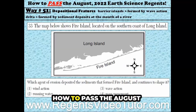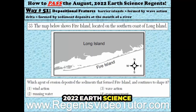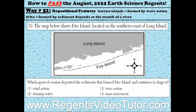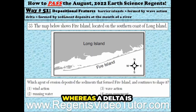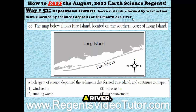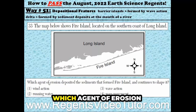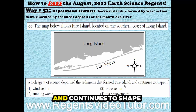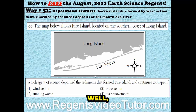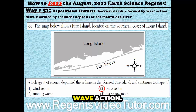Way number 51 on how to pass the August 2022 Earth Science Regents. Depositional features such as barrier islands are formed by wave action, whereas a delta is formed by sediment deposits at the mouth of a river. The map below shows Fire Island located on the southern coast of Long Island. Which agent of erosion deposited the sediments that formed Fire Island and continues to shape it? Fire Island is known as a barrier island, and that is formed by wave action.